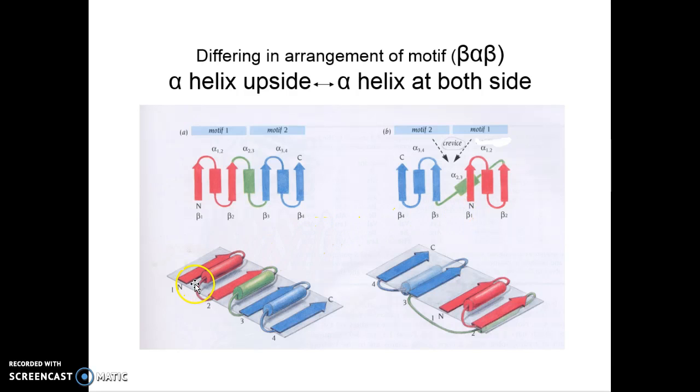Given that beta-alpha motif is always right-handed, in this case all alpha helices are positioned above the parallel beta plane, whereas on the right panel, the red helix is positioned above parallel betas while the blue helix is positioned below the beta plane.